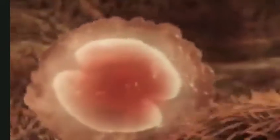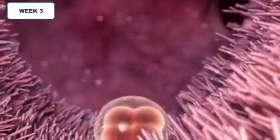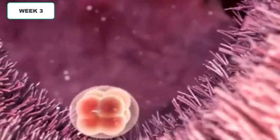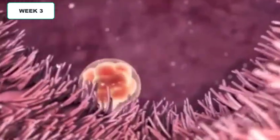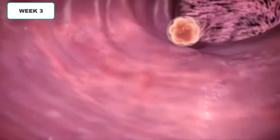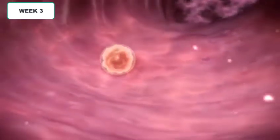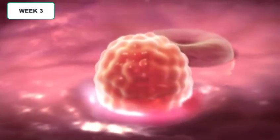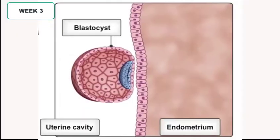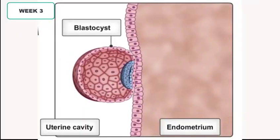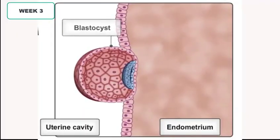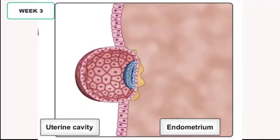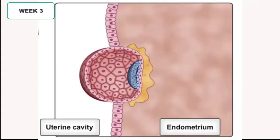Your baby is now formed and the zygote starts multiple cell divisions. We are now in week three. As cell divisions go on, the zygote is slowly moving through the fallopian tubes toward the uterus and finally finds a suitable area in the uterine lining for implantation. The now-called blastocyst inserts itself deep into the endometrium and continues growing from there.